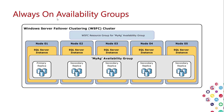If databases are primary on node 1 and you failover to node 3, all those databases will be primary on node 3. This matters because applications often need more than one database — this way, all databases that application needs are available on the new primary node. Each node has its own SQL Server instance, and you can have more than one availability group with disjoint sets of databases.